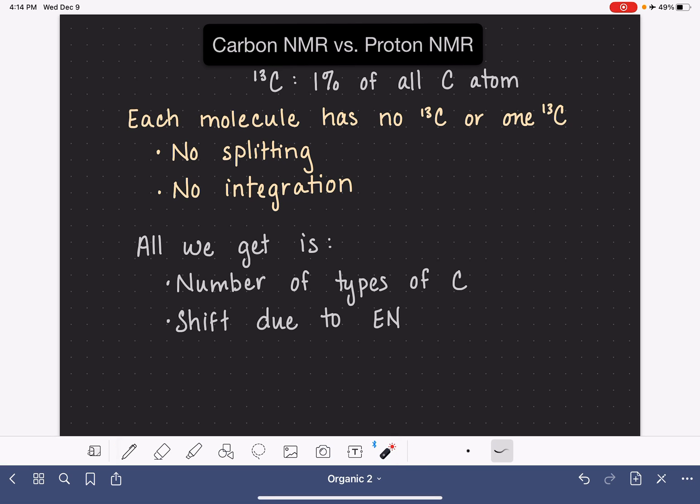Regular carbon-13 NMR is definitely not as valuable as proton-NMR because we don't get any splitting and we don't get any integration. But carbon-13 NMR does give us useful information, especially when we use it in conjunction with proton-NMR. It's very helpful for determining the structure of a molecule.